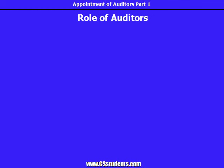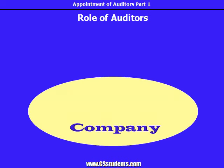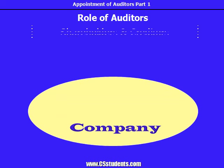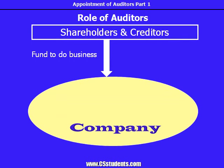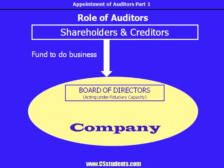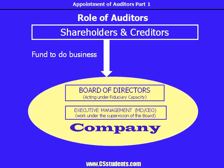Let's first talk about the broad role of the auditors. Corporate structure is a mix of various parties. At the center, we have the company, then shareholders and creditors who fund the company for doing business, then board of directors who have the primary authority to run the business. The board is supposed to work in a fiduciary capacity, in the interest of the company. And then, the executive management of the company.